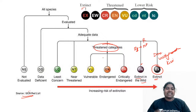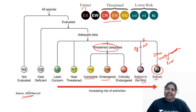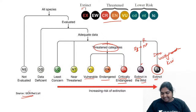The next important category is the Threatened category. Threatened includes vulnerable species, endangered species, and critically endangered species. Among these three, who is having the higher risk and is more prone to extinction?